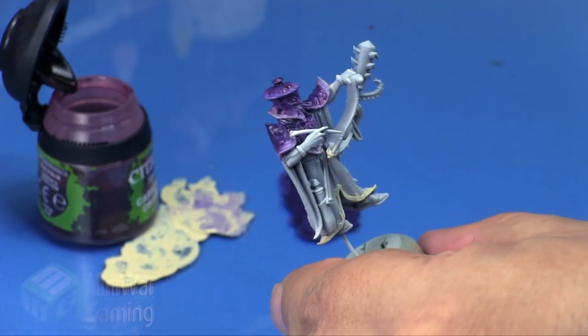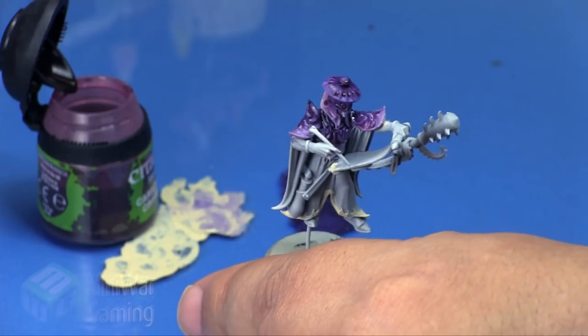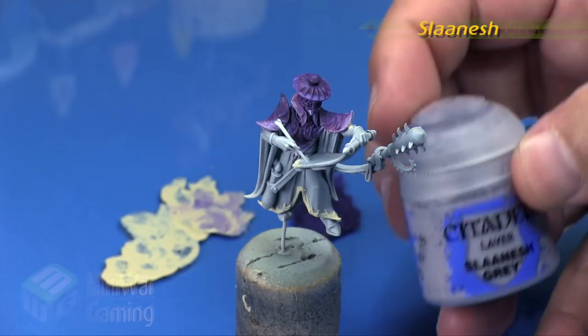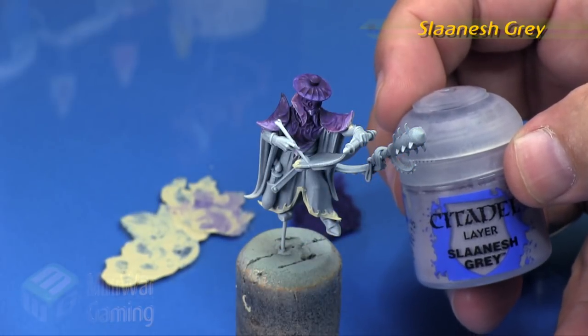We're not laying it on too heavily. We're just looking for it to tint. Anywhere you see it pooling up I do pull that out of the recesses as I didn't want it to pool up.